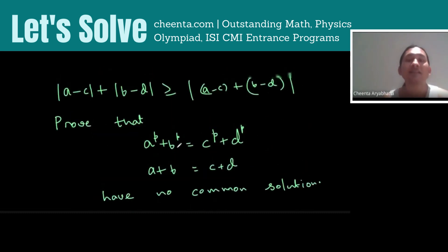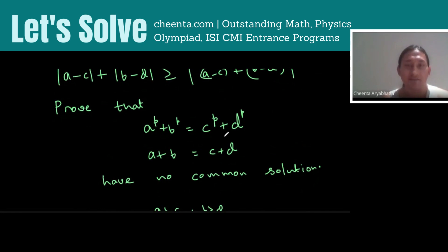which cannot be true because x and y belong to two disjoint intervals. Therefore, these two equations do not have a common solution.